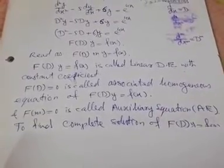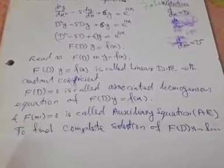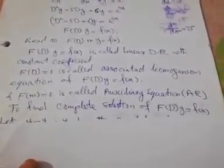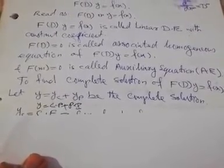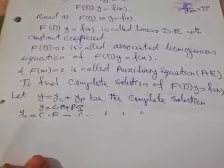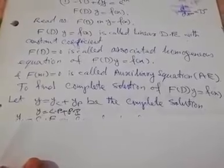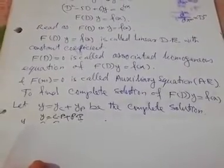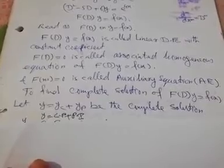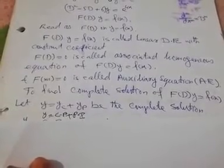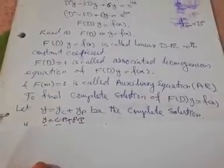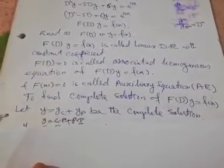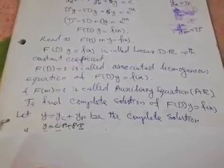f(D) equals 0 is called the associated homogeneous equation, and f(m) equals 0 is called the auxiliary equation. To find the complete solution of f(D)y equals f(x), we suppose that y equals complementary function plus particular integral. There are two terms: complementary function and particular integral.